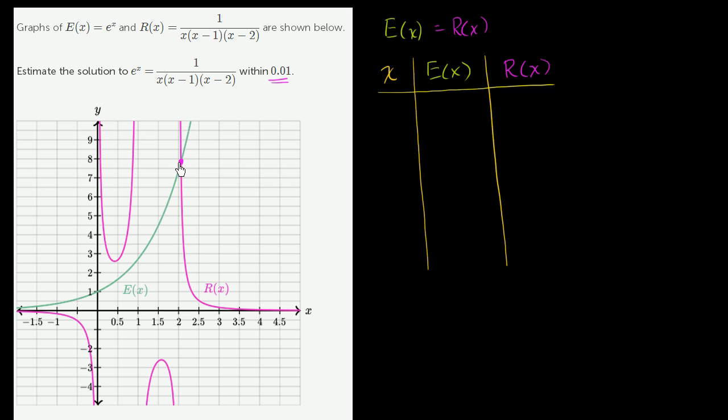Eyeballing is helpful because that'll give us our first order approximation of at what x value these two functions are equal. If I just look at this graph the way it's drawn, it looks like this is pretty close to 2.1.